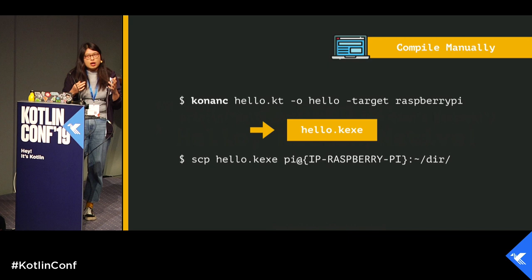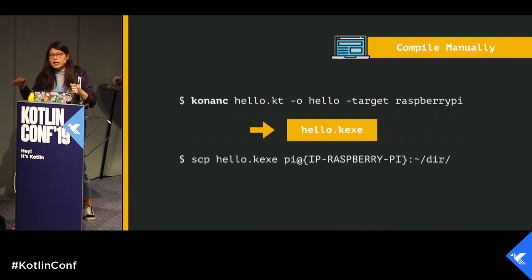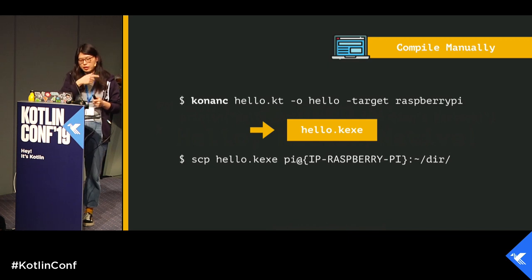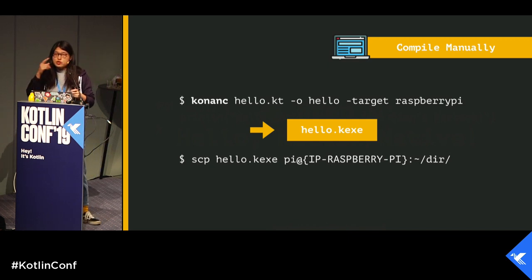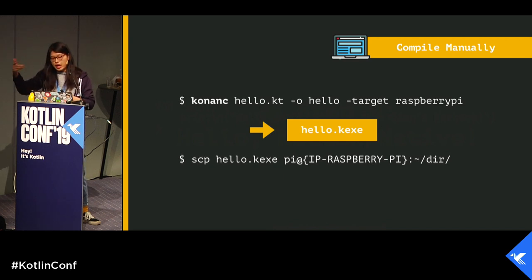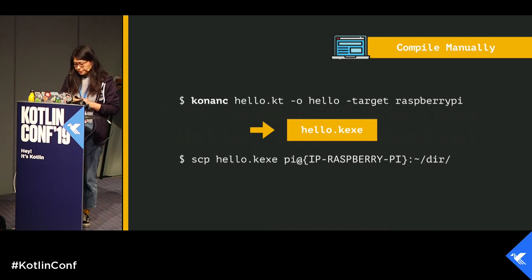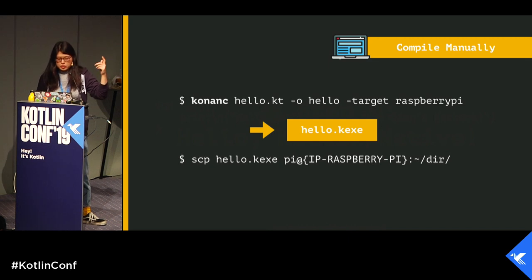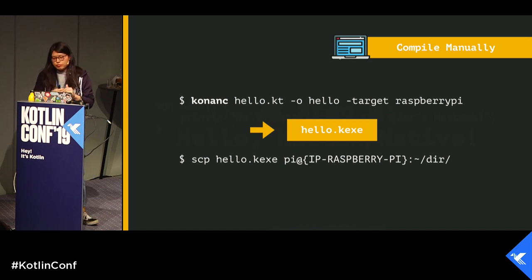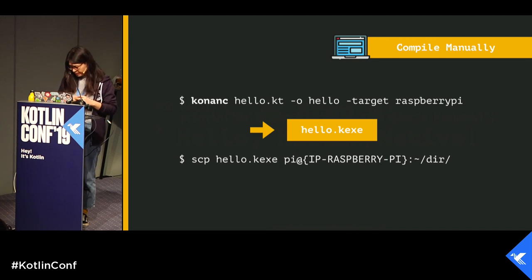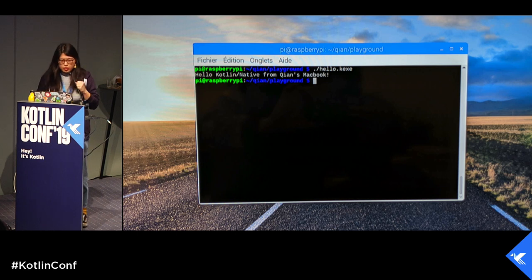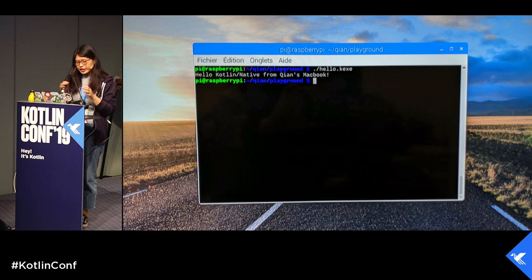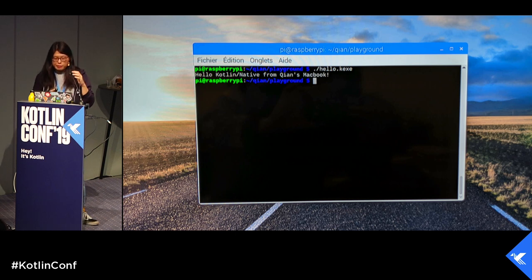I thought the best way to understand how things work was to compile everything manually. Using the Kotlin Native compiler is actually very simple — you just specify the output name and the target platform name. It generates an executable ending in .kexe, and to make it work on Raspberry Pi you just copy it over with a simple SCP command. And it works. That was the very first Kotlin Native application I ran on my Raspberry Pi.